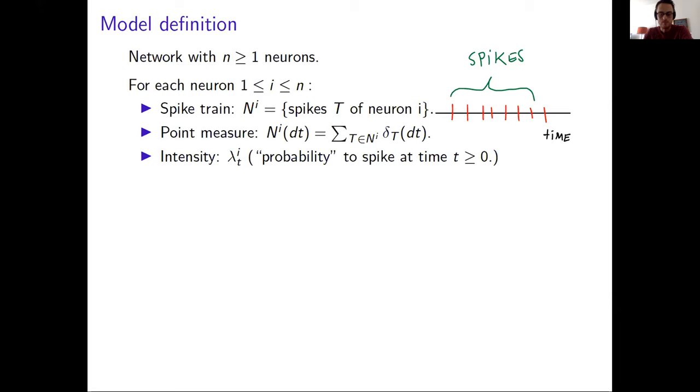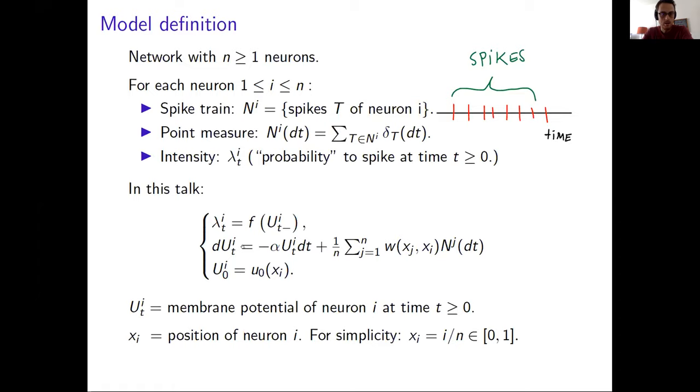In this talk, I'll be focused on a specific example. So Lambda_i here for me is F of U_i(t). So U here is the membrane potential at time t. And we assume that U_i(t) changes through time due to spikes as follows. There is this term here indicating that there is an exponential decay with rate alpha. Each neuron is being attracted to zero in this sense.